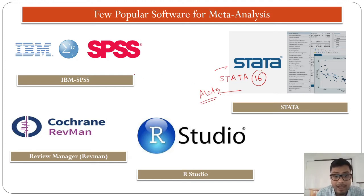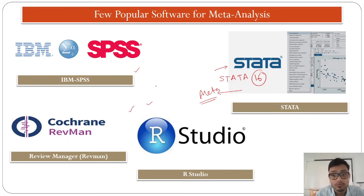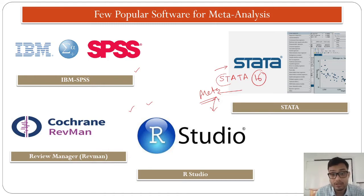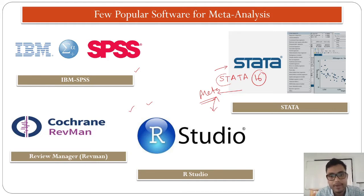In the case of IBM SPSS or RevMan or RStudio, you have to input your data and ultimately calculate your meta-analysis. Stata and RStudio are softwares where command knowledge is more important — you have to learn command prompts to conduct a smooth meta-analysis. Those are a few common, useful, and popular softwares used for meta-analysis.